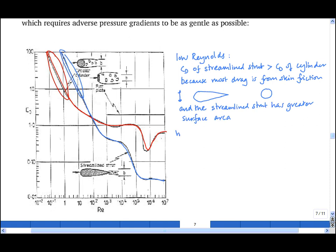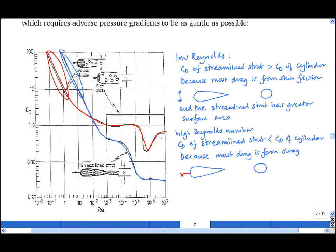However, at high Reynolds number, the drag coefficient of the streamlined strut is less than that of the cylinder. And this is because most of the drag is from form drag. And if I draw the flow around the streamlined strut, the flow remains attached all the way over the back of the streamlined strut.